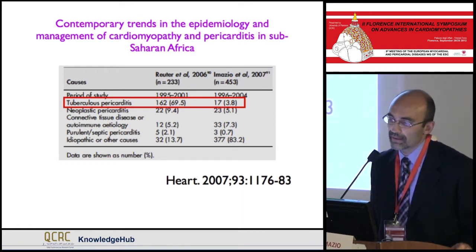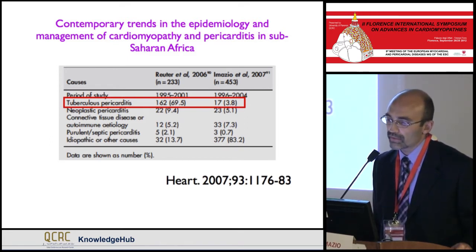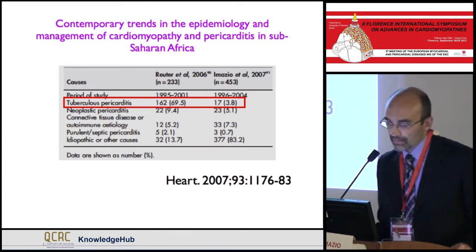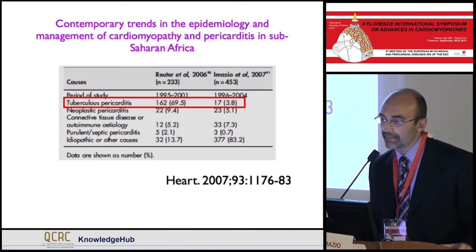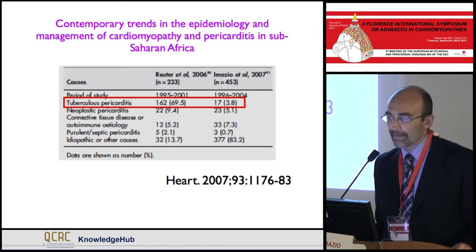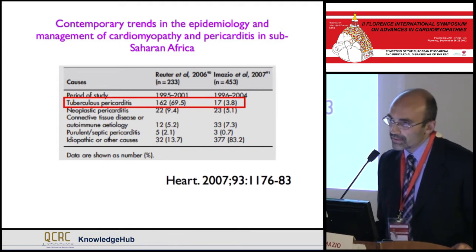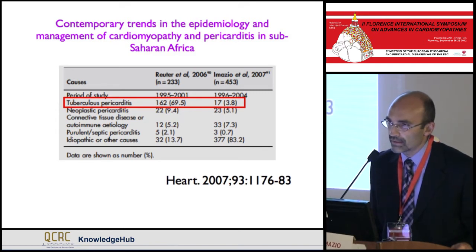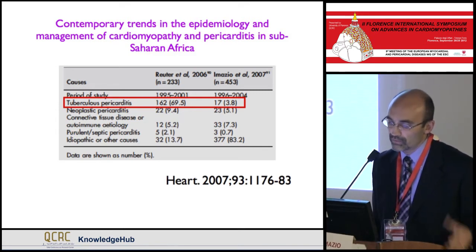Comparing the largest series from Africa with the largest European one, tuberculosis accounts for about 70% of cases in South Africa — especially frequent in the setting of HIV infection — while in Italy and Europe, and similarly in the US, the frequency is less than 4%. Epidemiology and ethnicity are important. Immigration may change the epidemiology of pericarditis even in Western Europe and North America.